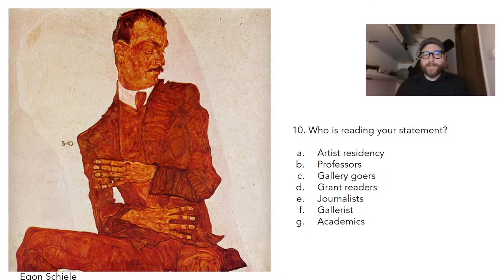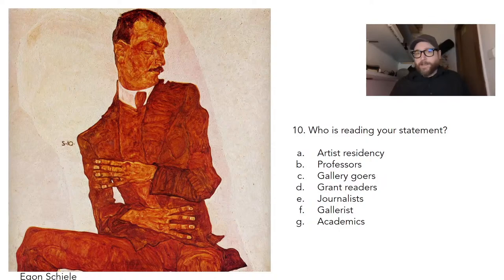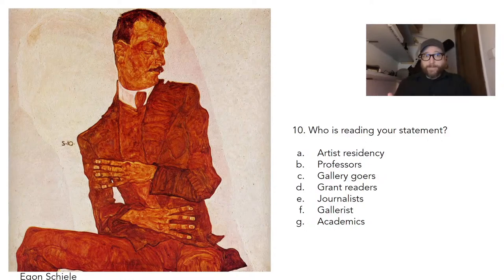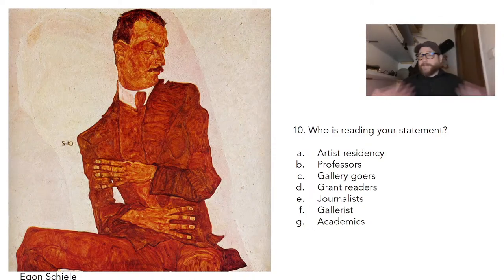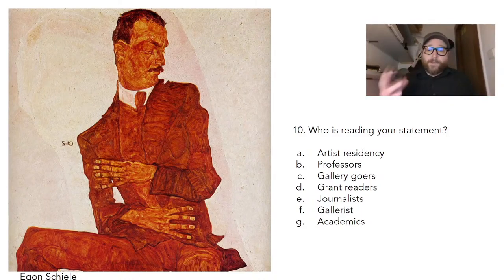So the first lesson — number 10 — do think about who is reading your statement. Is it an artist residency? A professor for an MFA program? A gallery-goer off the street? Someone you're applying to for a grant? Grants are often community-oriented, so you'll want to highlight things that check the boxes. If it's about community engagement, make sure your statement reflects that.